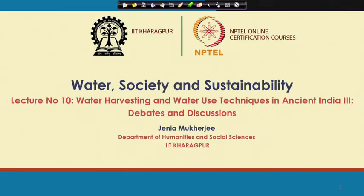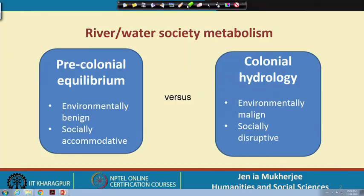This is the final component on water harvesting and water use technologies in ancient precolonial India, where I would now enter into debates and discussion. How the different schools of thought — historians, environmental historians, water historians — are trying to engage in a debate about whether all the water harvesting mechanisms prevalent in precolonial India were extremely good and beneficial with no negative repercussions for ecology and society. This debate is about precolonial equilibrium versus colonial hydrology.